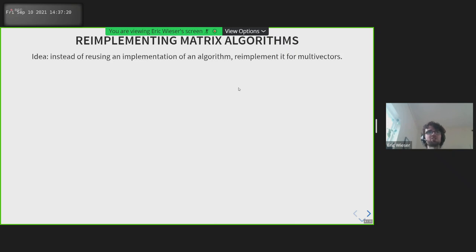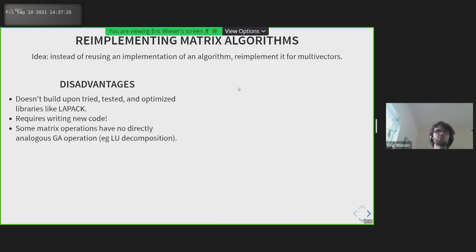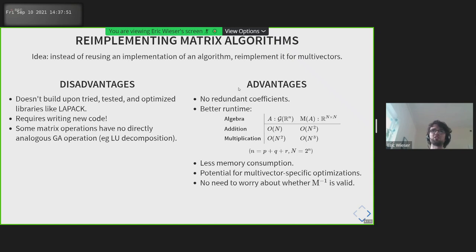Here's the main idea of this presentation. Instead of reusing an implementation of an algorithm, we can reimplement it for multivectors. The disadvantage of doing this is that we can no longer use existing binaries like LAPACK, which are tried, tested, and optimized. We have to write our own new code so we can be introducing bugs, and there are some operations that are hard to translate. For instance, you can't really do an LU decomposition of a multivector because the meaning of lower and upper triangular doesn't really make sense.